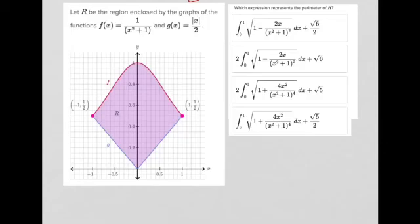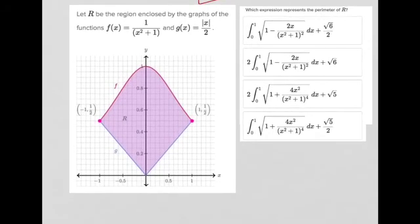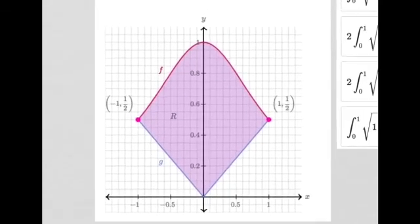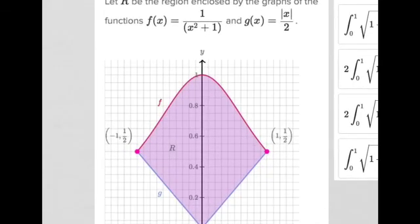So we're going to have two equations, or two functions. First we have the f, which is given by this, and g, which is given by that, and we're supposed to find the perimeter. I think I'm going to zoom into this, and then I want you to try and figure out the interval.